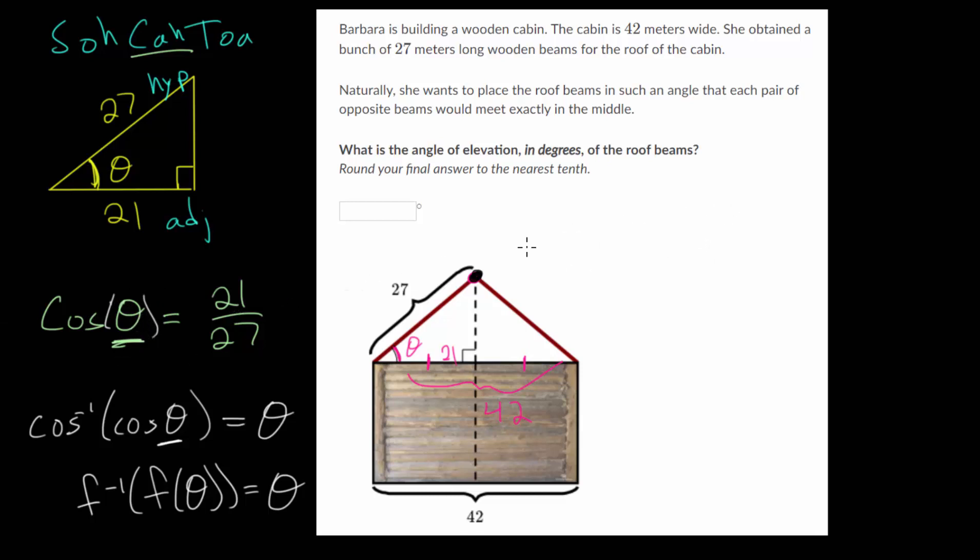So let's do that up here. We're going to take an inverse cosine of each side, so the inverse cosine of the cosine of theta, and that will be equal to the inverse cosine of 21 over 27. And like I mentioned, when you plug in the function into its inverse, they're going to cancel each other out,